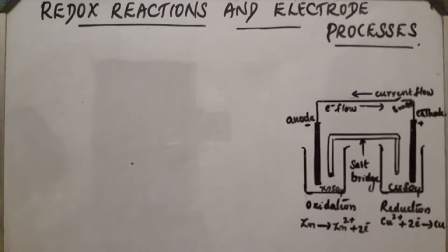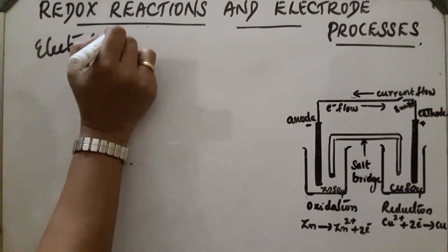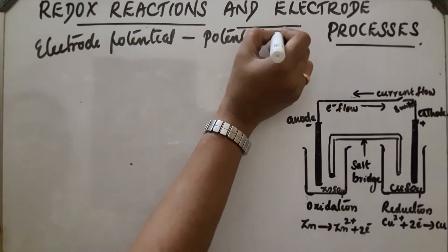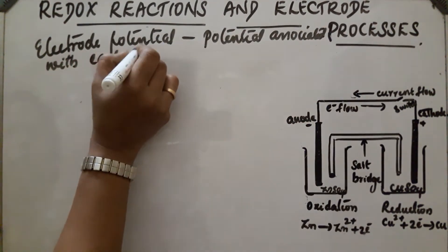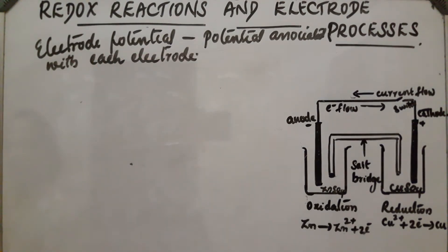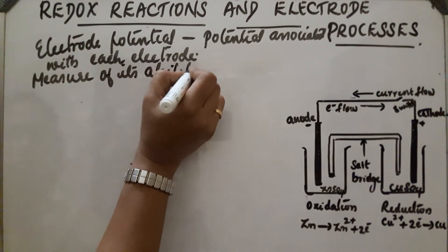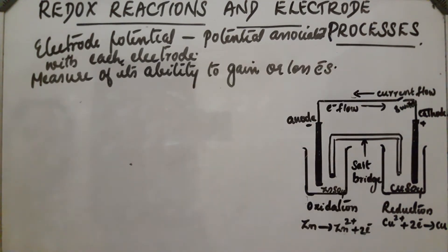Electrode potential: due to the potential difference between zinc and copper, the flow of current takes place in the Daniel cell. The potential associated with each electrode is called electrode potential. It is the measure of its ability to gain or lose electrons.